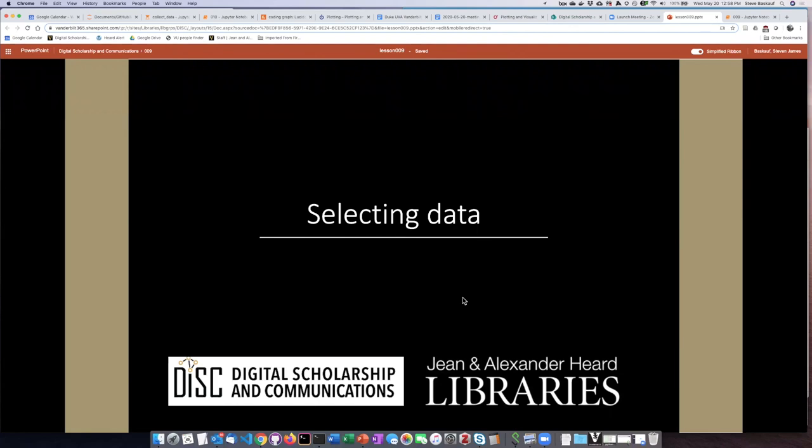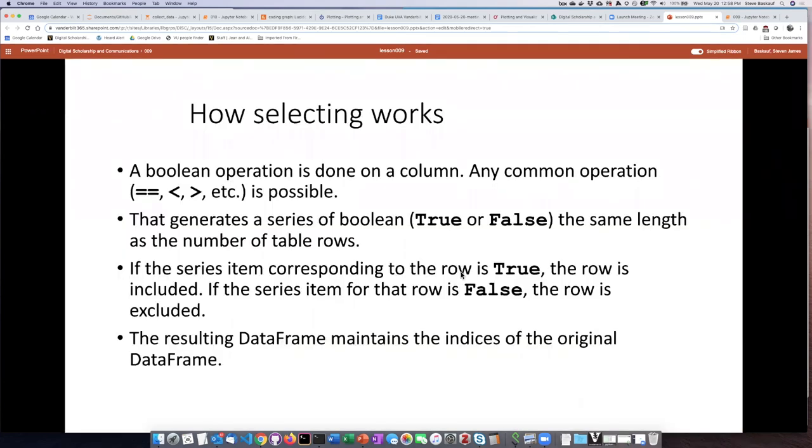Selecting only certain rows in the DataFrame based on some kind of criterion is obviously a very useful and powerful operation that we might want to perform when we're wrangling our data. And before we look at how to actually do this in the code, we need to talk a little bit about how the selecting works.